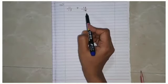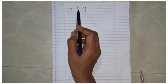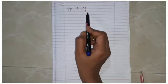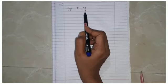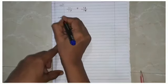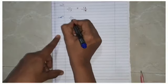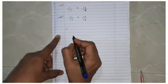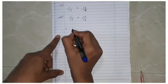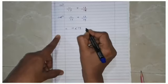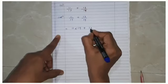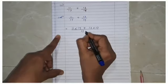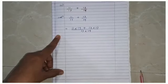Our third sub-question is 11/17 + 13/19. The denominators 17 and 19 are not the same, so we go for cross multiplication. Solution: 11/17 + 13/19 = (11 × 19 + 13 × 17) upon (17 × 19).